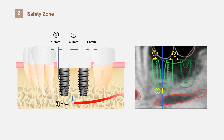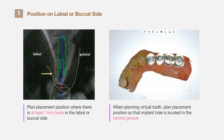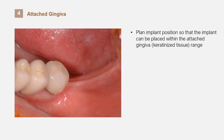If the implant is fully osseointegrated, you can consider it as a natural tooth. This means that if the implant was placed a long time ago and is fully osseointegrated, you can give a safety distance of only 1.5 millimeters rather than 3 millimeters. When planning the implant location, there must be 1 millimeter of residual bone left on the labial and buccal side in the coronal view. When arranging the tooth virtually, the implant should be designed so that the implant hole is located on the central groove.